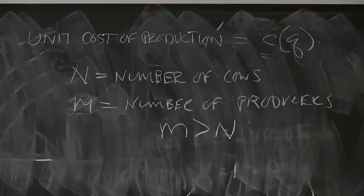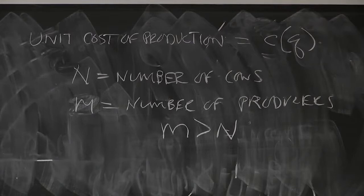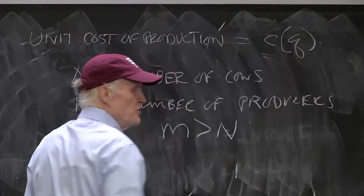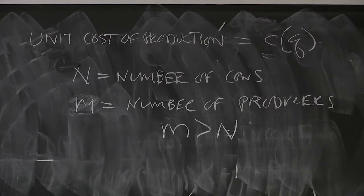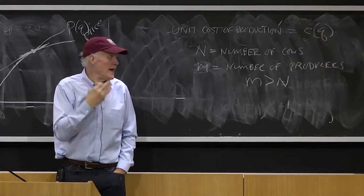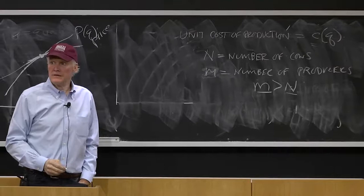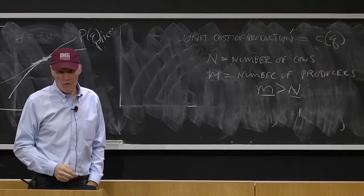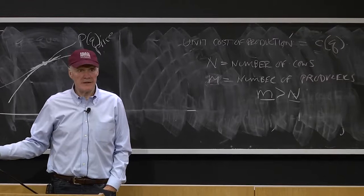And why? What does that imply? What am I going to know once I know there are more producers than consumers, and each producer gets to choose whether he wants, how much he wants to produce? He can choose zero if he wants. And he has cost C of Q of producing quality level Q. If I have more producers than consumers, each consumer is going to buy at most one unit, each producer can produce at most one unit, what's going to happen? What happens once I know M is bigger than N? Well, no producer, I mean, more than that, there's excess supply of producers.